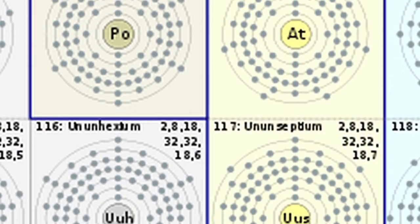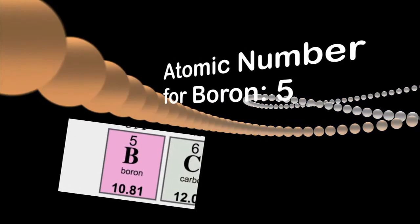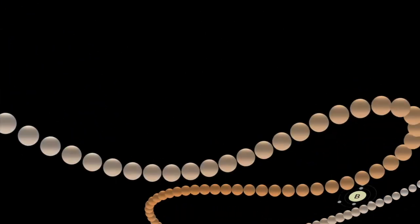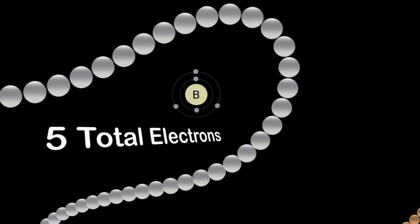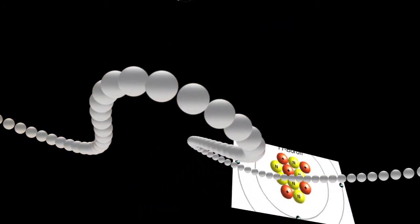Each element has its own atomic number, which corresponds to the number of dots or electrons in a neutral atom. Atoms can have more or less electrons than their atomic number.